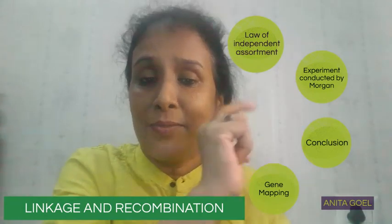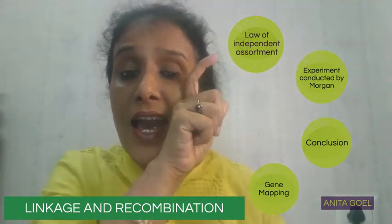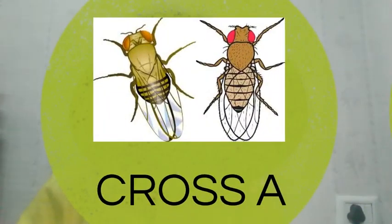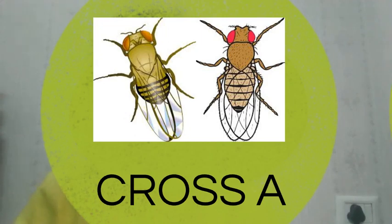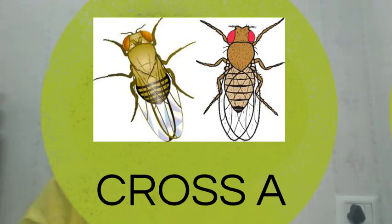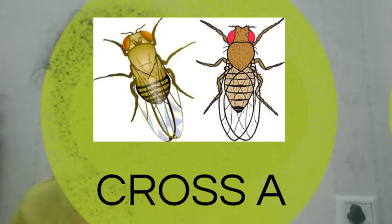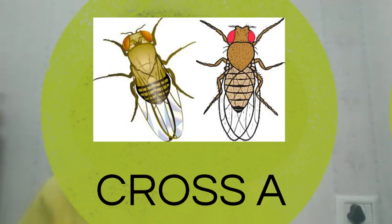Now let us study Morgan's experiment. He performed two crosses. In Cross A, he took two Drosophila: one female with white eye and yellow body, and another male with red eye and brown body. Red eye and brown body is the normal wild-type trait, while yellow body and white eye is the mutant trait — recessive. Red eye is dominant, brown body is dominant, white eye is recessive, yellow body is recessive.